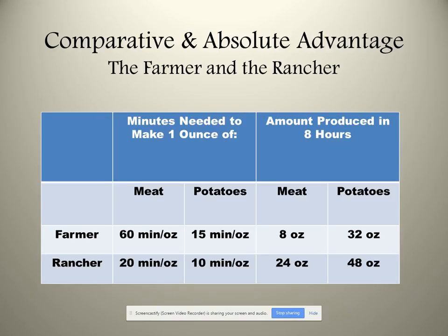This is a profound idea, and I want to illustrate it by talking about a mythical farmer and a rancher. Here is some production information about how much meat and potatoes each of these two producers can make. I've listed the number of minutes needed to produce one ounce, and also how much they can produce in a given eight hours. Let's focus on the right side of this chart.